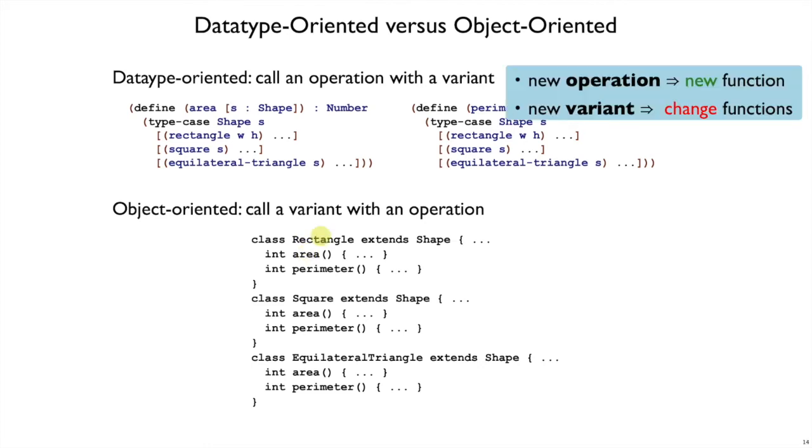So the difference is that with datatype-oriented programming, every time we want a new operation like area, perimeter, or scale, then we write a new function and we don't have to change any of the old functions. But when we add a new variant, like circle, then we have to change all of our old functions like area and perimeter.